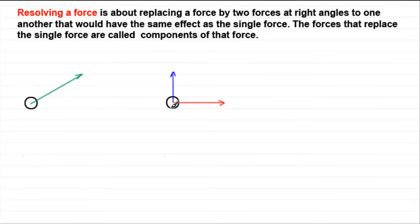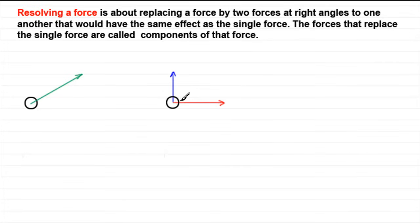I always think of this as two ropes being attached to a particle. If you were to pull in these two directions with two forces, you'd expect your particle to move somewhere in the middle, depending on how strong the forces were. If this force was a lot stronger than this one, the particle would move along here. But if this one was stronger, it would move closer to the vertical. What we've got here is these two forces which are going to replace this force here.